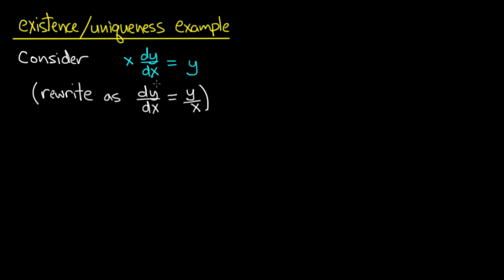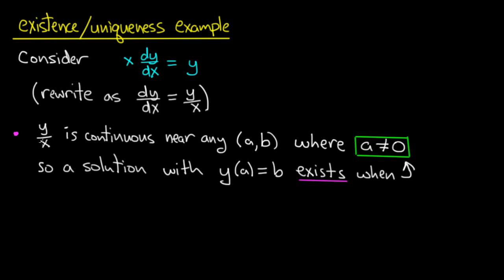First, let's note that we can rewrite this equation as dy/dx equals y over x. This is the form we need in order to apply the Existence Uniqueness Theorem, because in that theorem we have dy/dx equals f on the right-hand side. So our f is y over x. The first thing to do is check the continuity of f, and y over x is continuous near any point so long as a is not equal to 0.